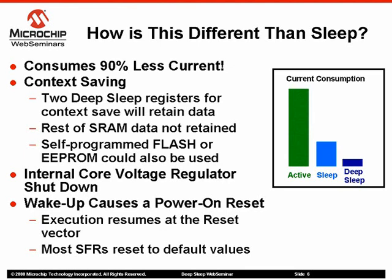Waking up from deep sleep causes a power-on reset, so execution will resume at the reset vector rather than at the instructions that follow the sleep instruction. Special function registers will reset to their power-on reset default values. However, certain registers, such as TRIS bits, will not affect device behavior until the deep sleep release bit is cleared later by software. We'll talk more about the release feature later during the firmware overview.